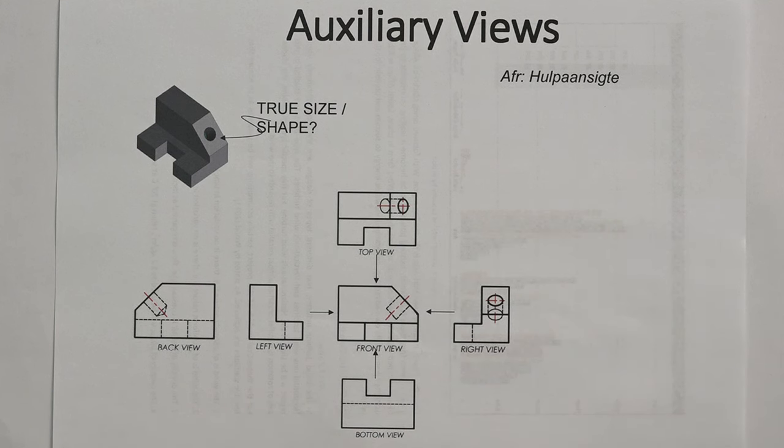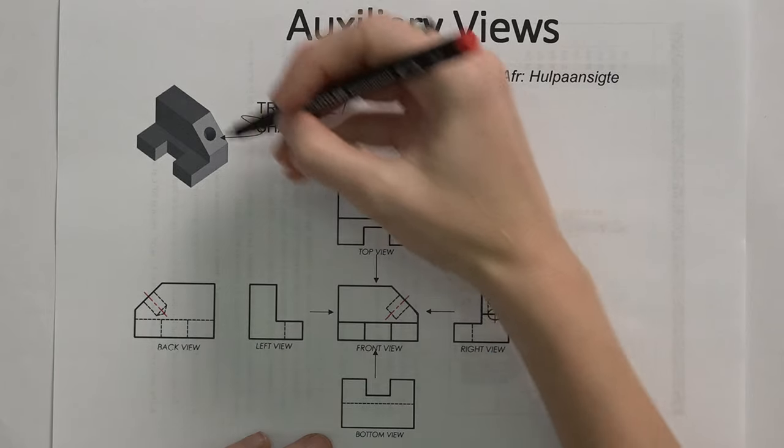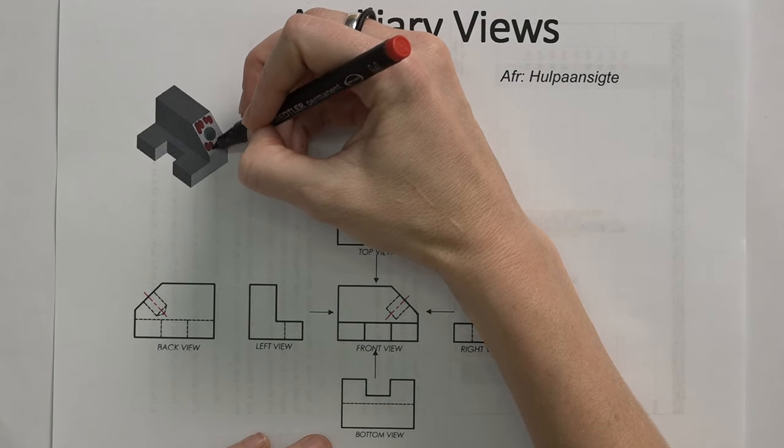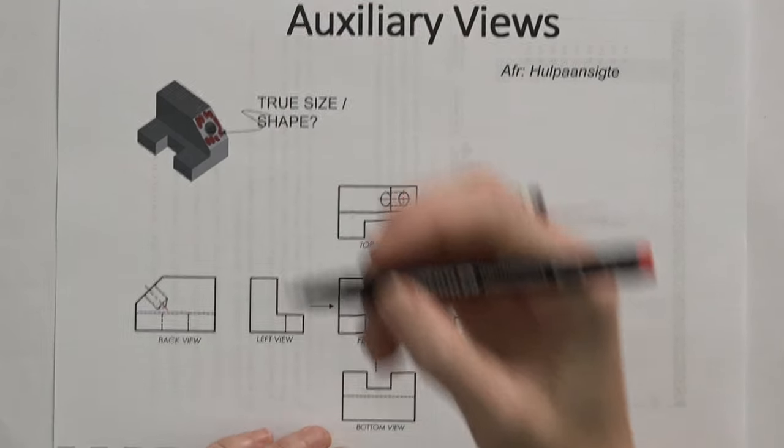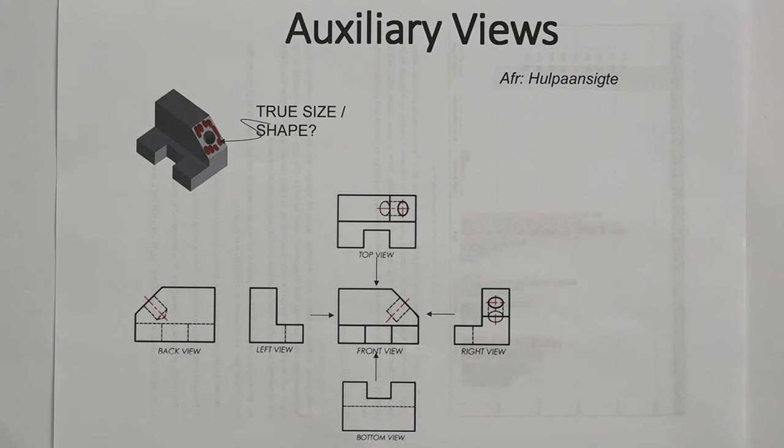So an auxiliary view is a view that I can use to work with a diagonal face to get a true shape of what that looks like. That will typically be what the true shape looks like that I actually want to see. So how do I do this?